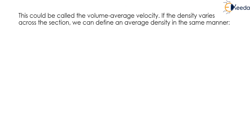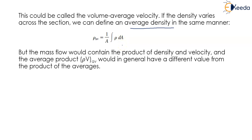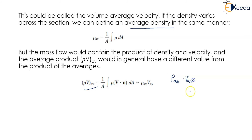This could be called the volume average velocity. If the density varies across the section, we can define an average density similarly: ρ_av equals 1/A times the integral of ρ dA. However, the mass flow contains the product of density and velocity, and the average product would in general have a different value from the product of the averages — that is, the average of ρV equals 1/A times the integral of ρV dot N dA, which does not equal ρ_av times V_av.